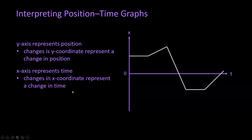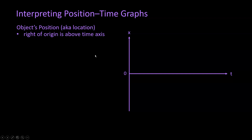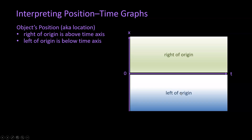Time always moves forward, so we're always going to have a change in the x coordinate. But as we've seen before, we won't always have a change in the y coordinate. So let's break this down in a systematic way. First, let's look at the object's position — its location relative to the origin. If the object is to the right of the origin, we're going to find the position timeline above the time axis. If the object's position is to the left of the origin, then we're going to find the position timeline below the time axis.